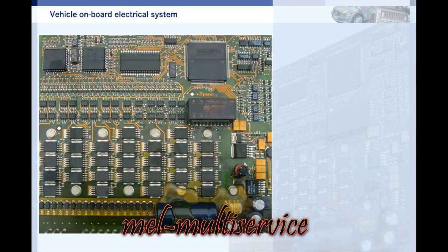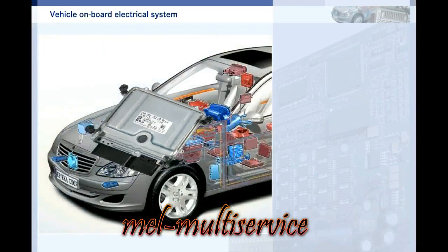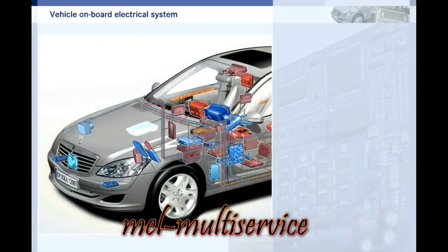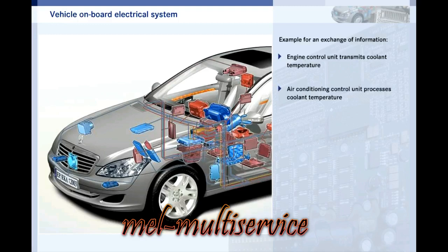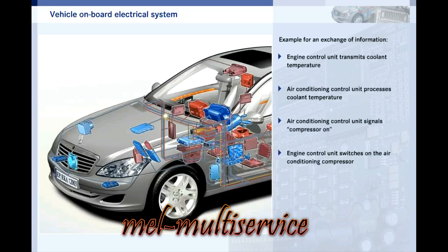The control units often have a clearly defined range of functions — for example, the engine control unit controls processes in the engine, and the air conditioning control unit controls the air conditioning system. However, the control units exchange information with each other. For example, the air conditioning control unit receives the coolant temperature from the engine control unit to adjust the heating. The engine control unit receives a signal that the air conditioning compressor will be switched on, and then raises the engine load to prevent the speed from being reduced.